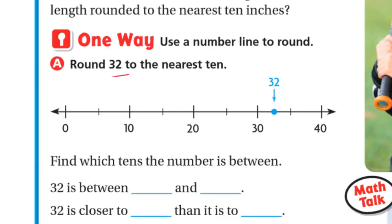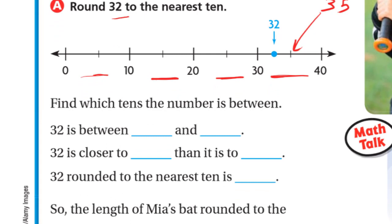If we want to place 32 on the number line — is it between 0 and 10? No. Between 10 and 20? No. Between 20 and 30? No. Between 30 and 40? Yes, it's greater than 30 and less than 40. The midpoint is 35, so we put 32 before it — after 30 and before 35.